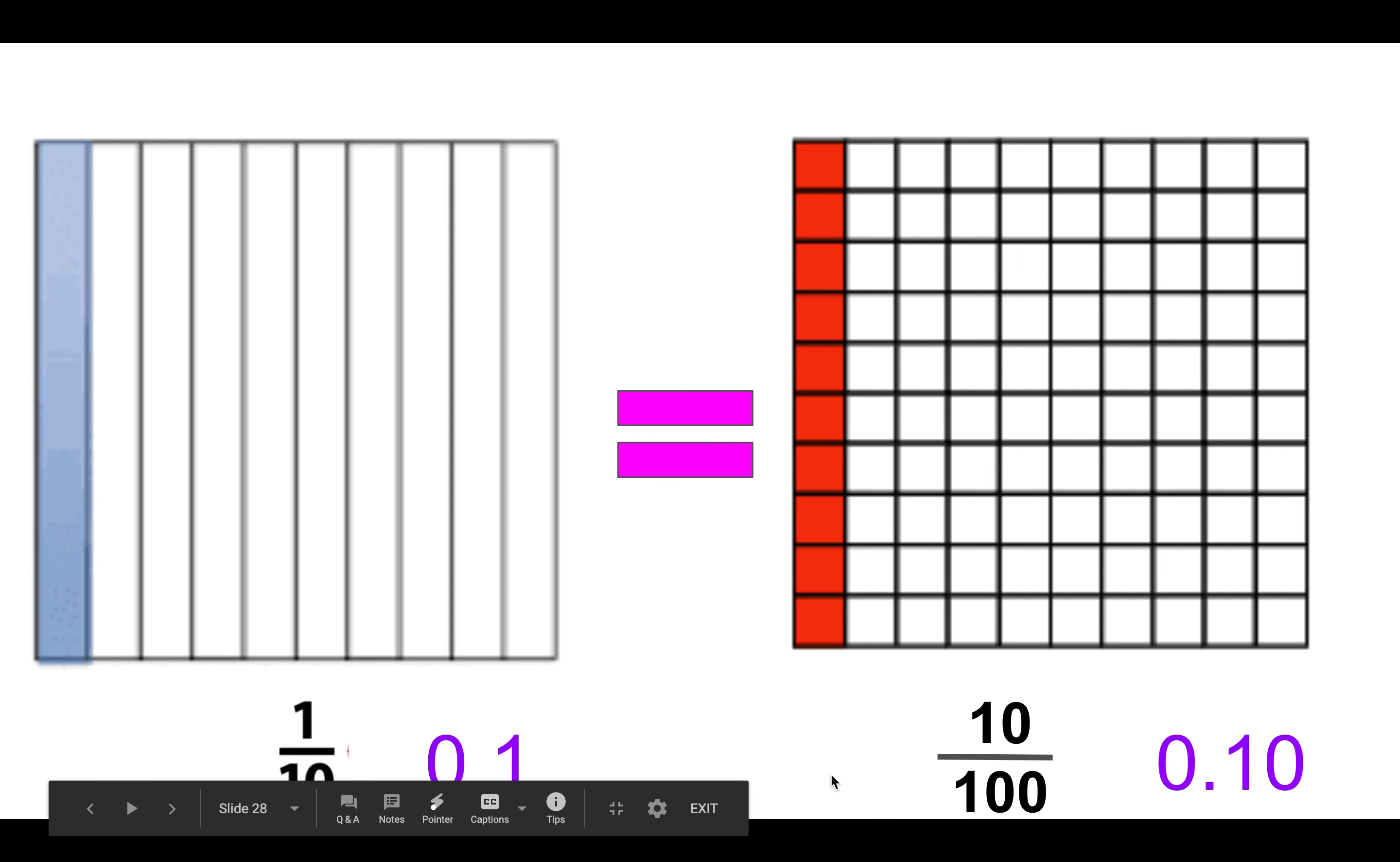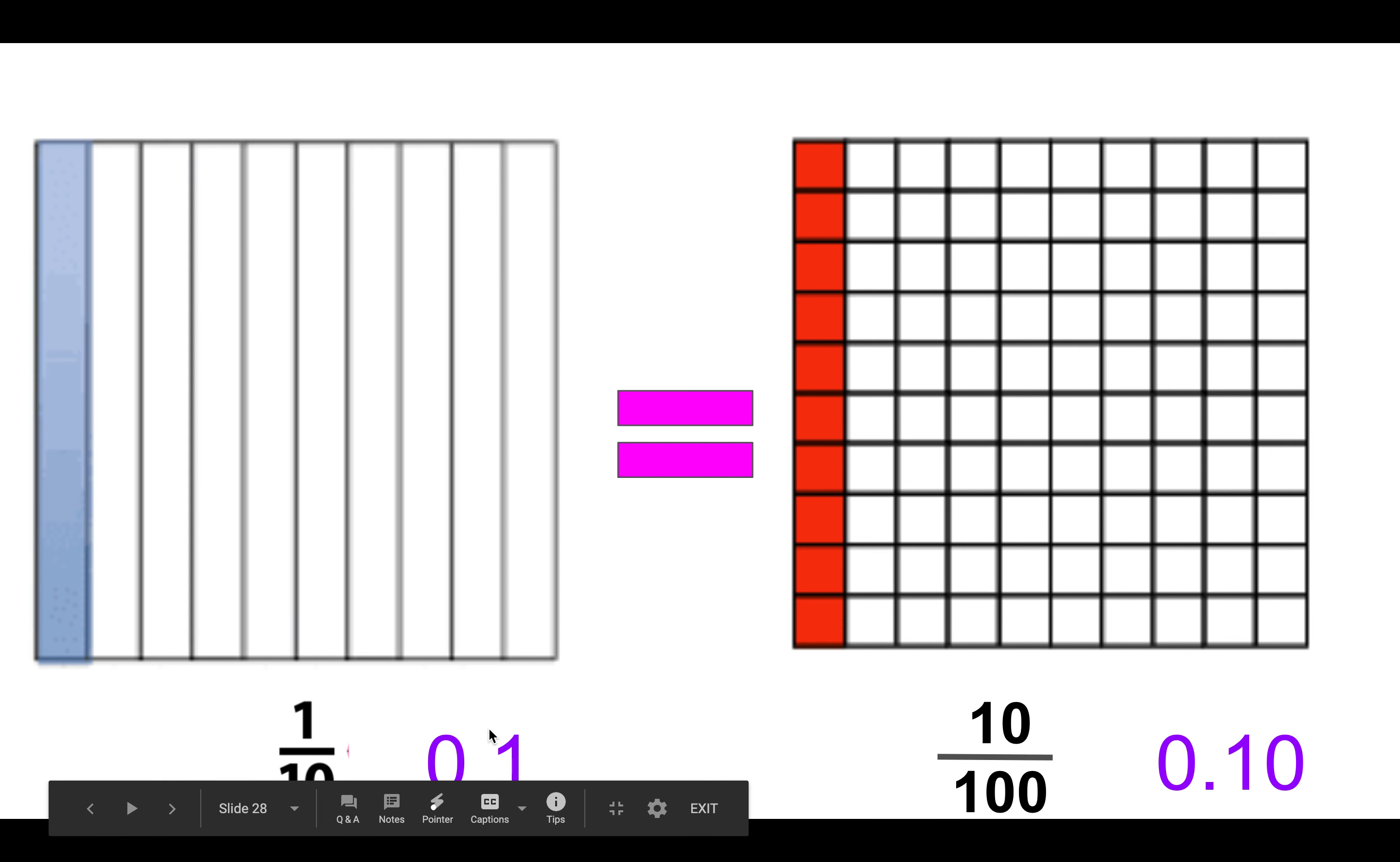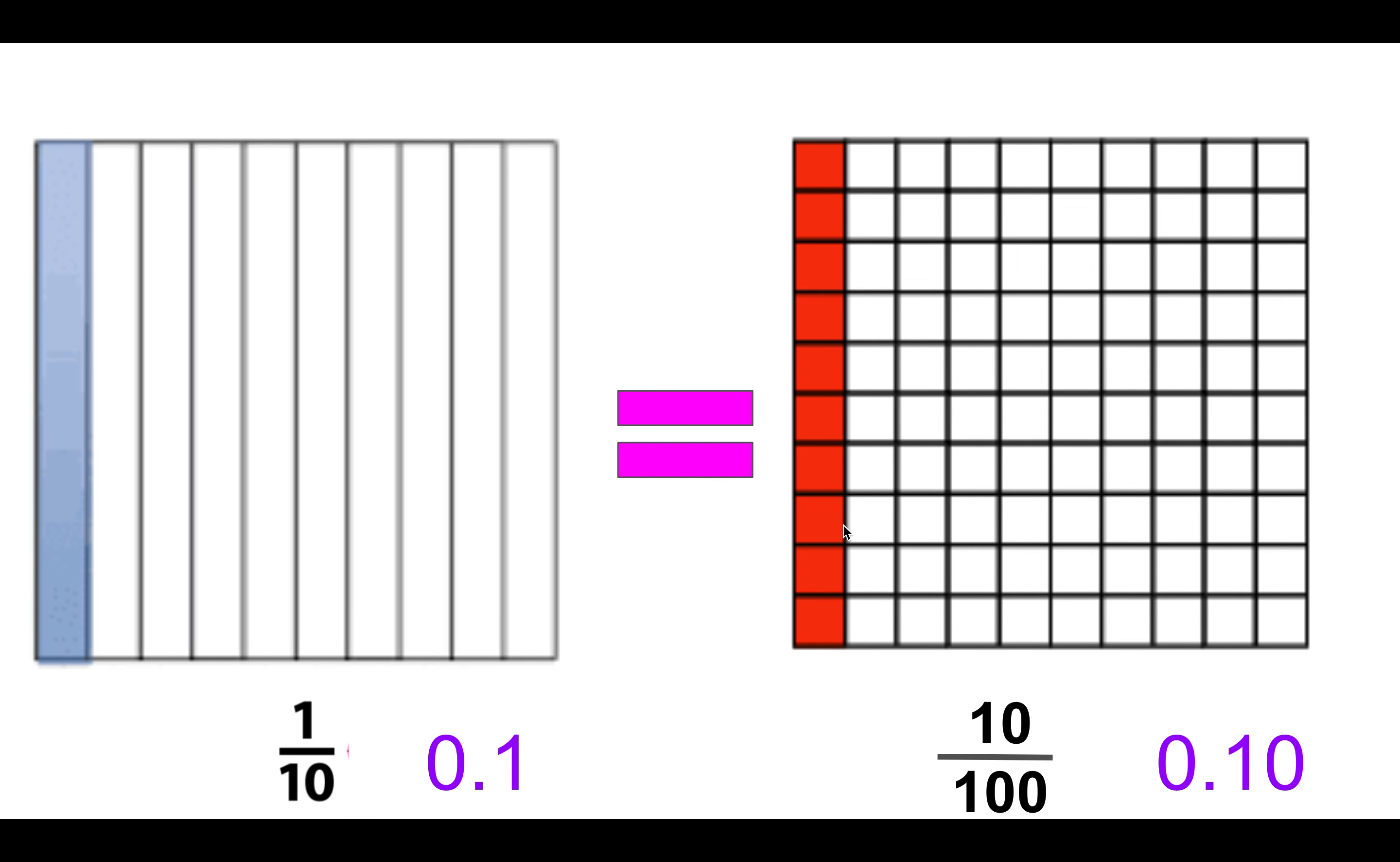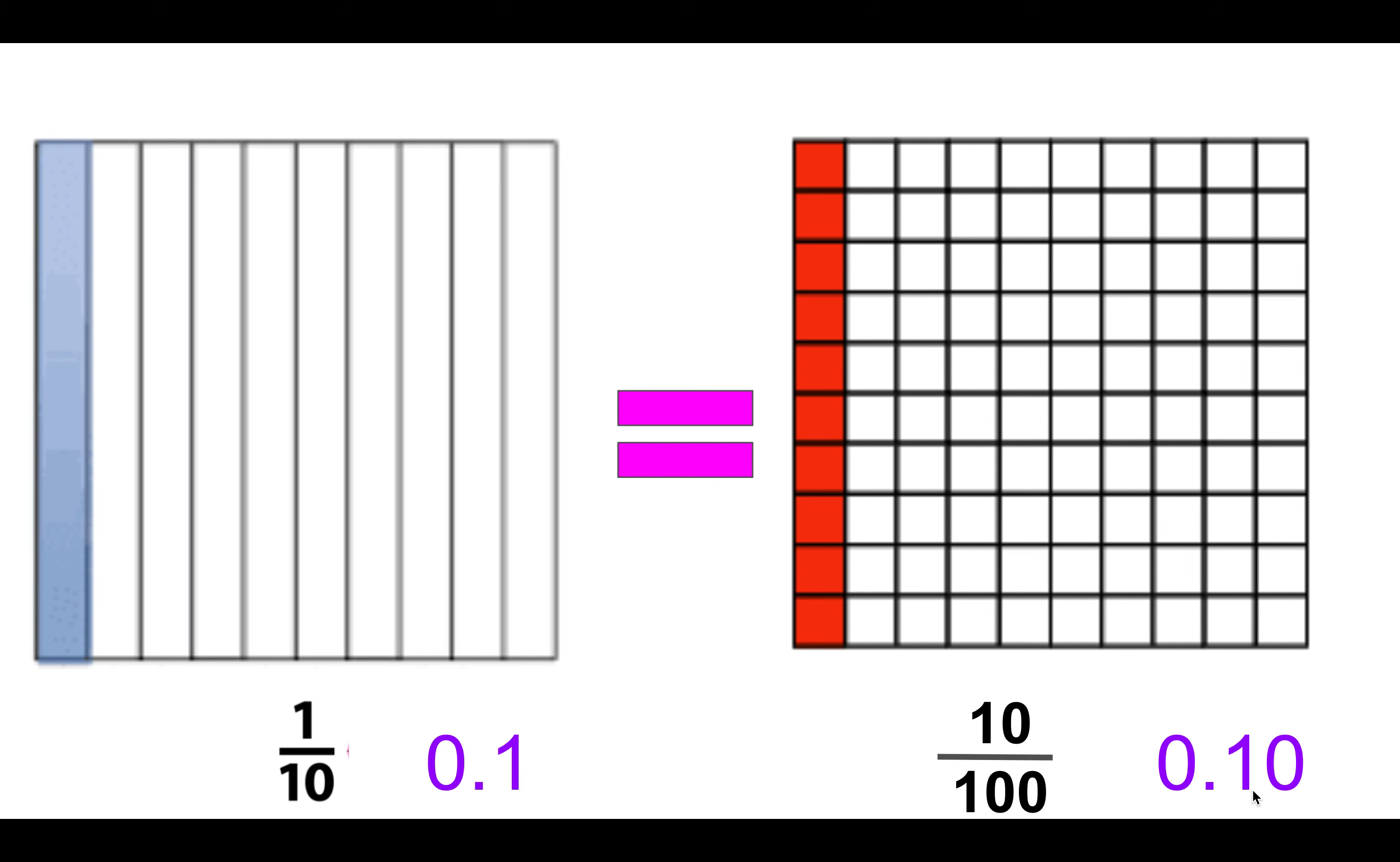You could also look at it using our squares. So this right here is one tenth. It's one of ten pieces. We can write it as a fraction or a decimal. And this also shows us something kind of cool. This is the same as one tenth. I just divided it into more pieces, so it looks like ten hundredths. And when I write it as a decimal, this says ten hundredths.